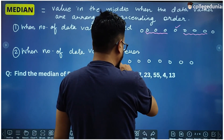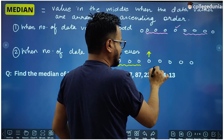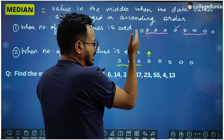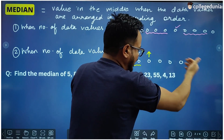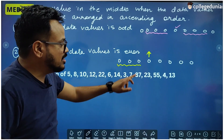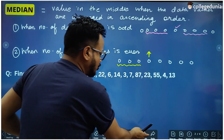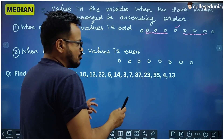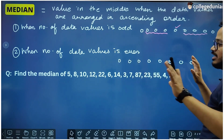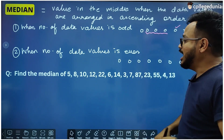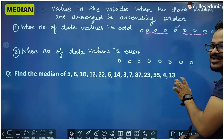If we leave three values from the right hand side and say this is the middle value, that is not possible — because on the left side of that value there are three values, but on the right there are four. So that value cannot be called the mid value. So if we leave four from each side there is nothing left, and if we leave three from one side there are four on the other.